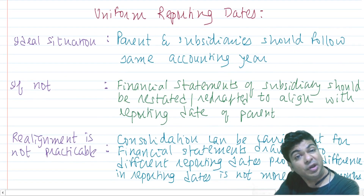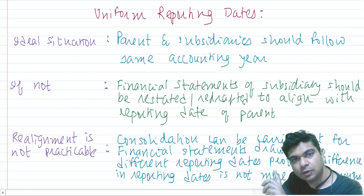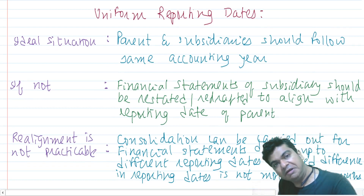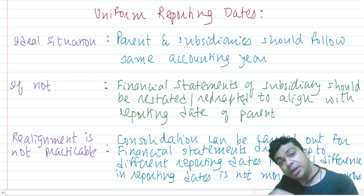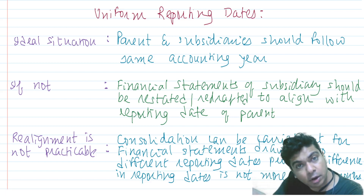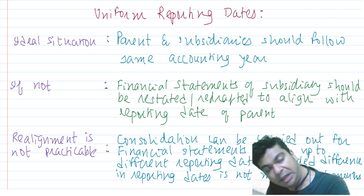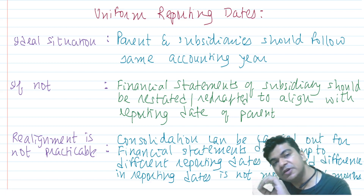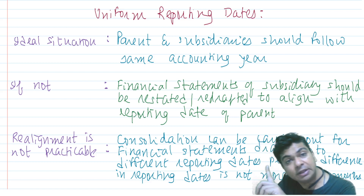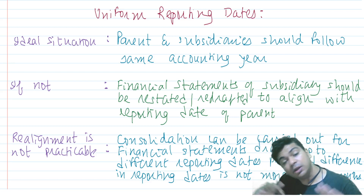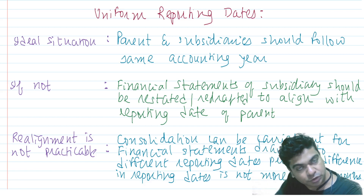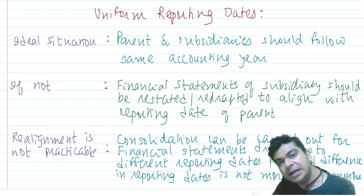Another issue is uniform reporting dates. Financial statements of the parent and the subsidiary should all be drawn up to the same date. For example, if the parent's year ends on 31st March, the year should end on 31st March for all the subsidiaries as well. That is the ideal situation — parent and subsidiary are all following the same accounting year.